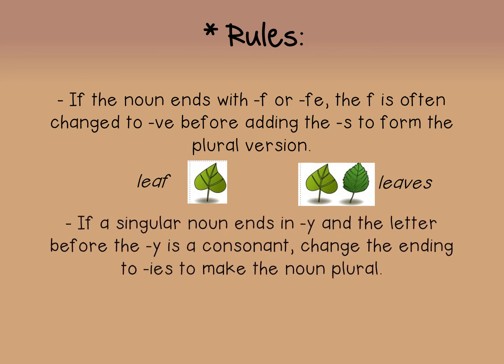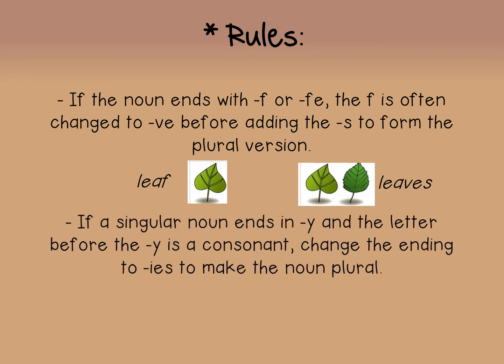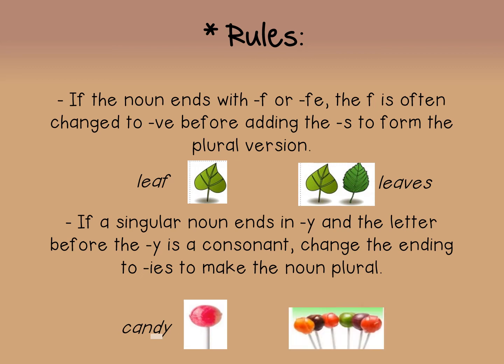The following rule: if a singular noun ends in Y and the letter before the Y is a consonant, then you change the ending to -IES to make the noun plural. For example, the word 'candy' — there's a D before the Y, so the Y changes into I and you add -ES, giving you 'candies.'